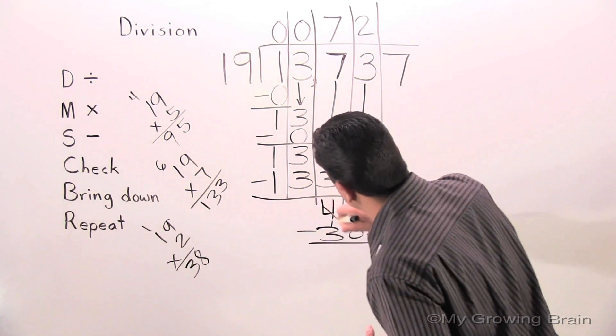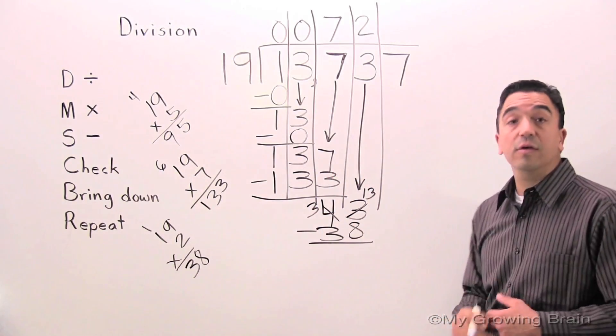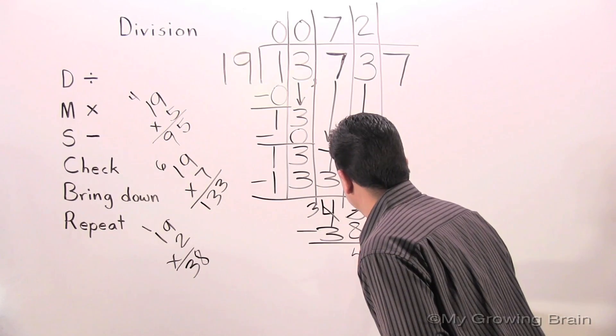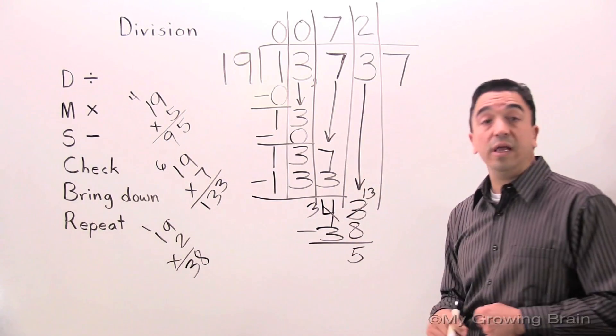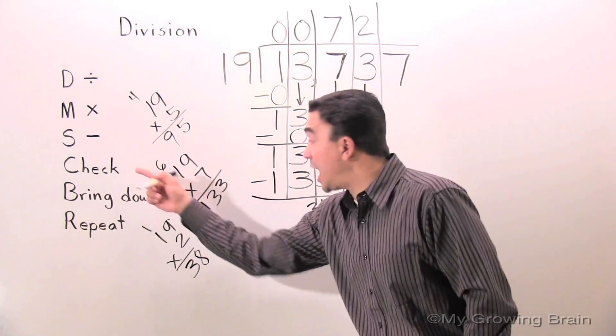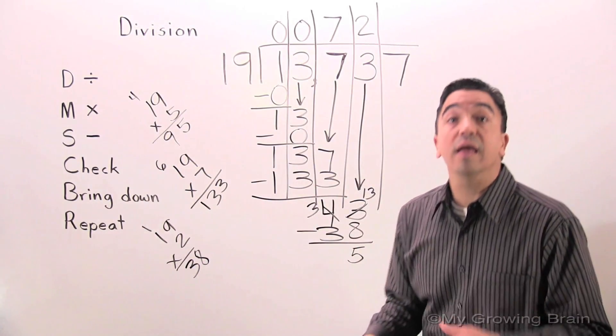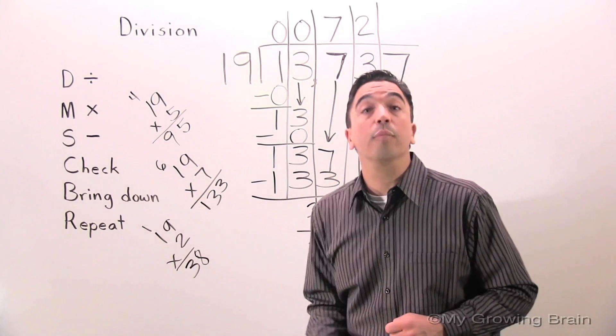After regroup. 13. 13 minus 8. 5. 3 minus 3. 0. All right. Next step. Check. 5 is less than 19. Keep on going. Next step. Bring down.